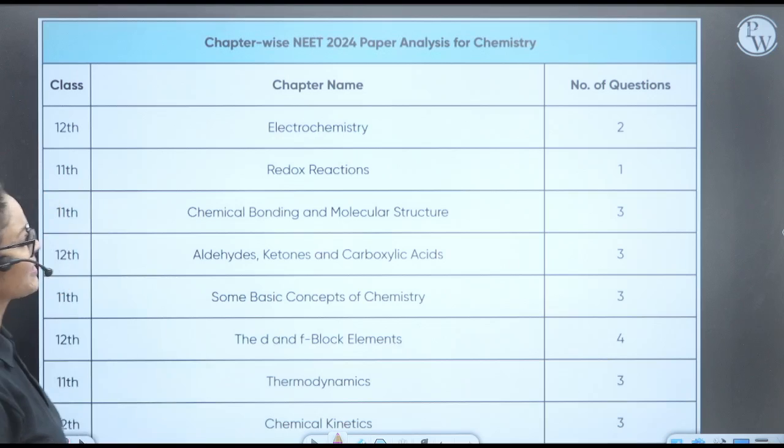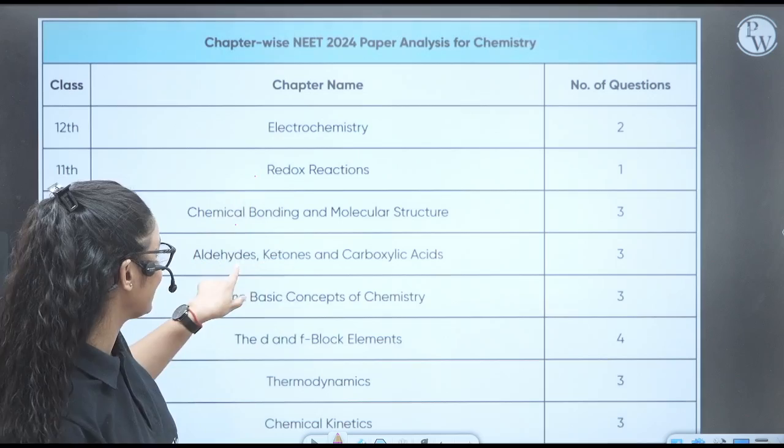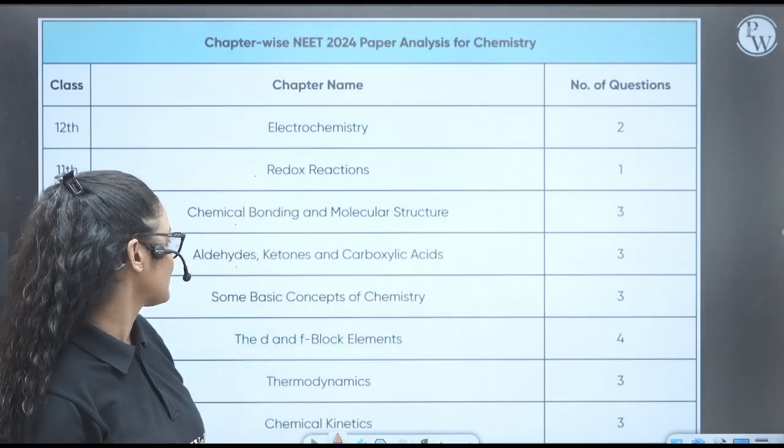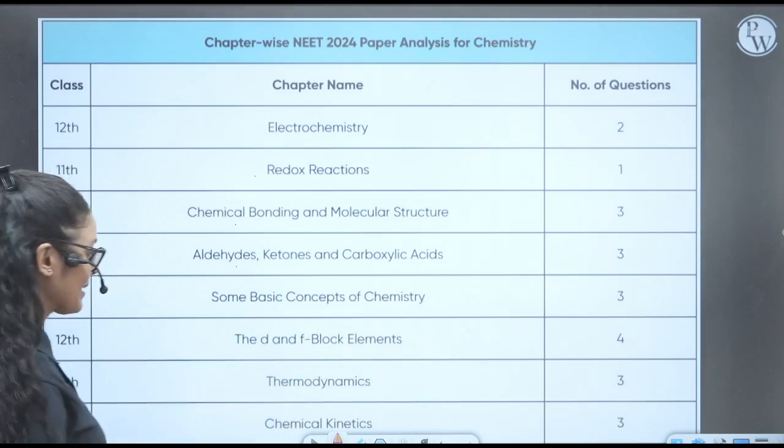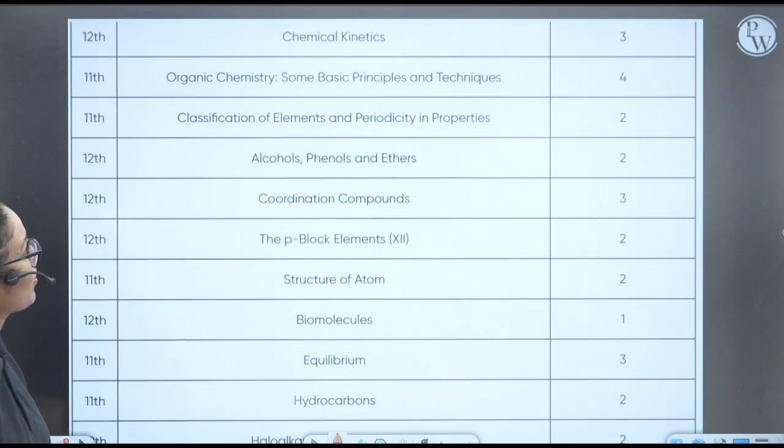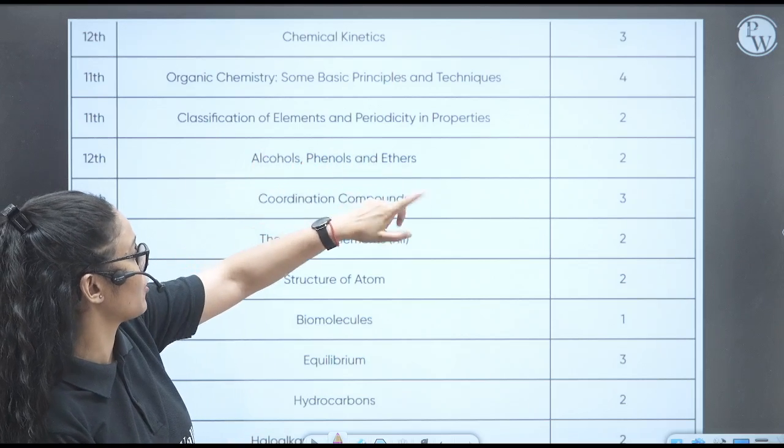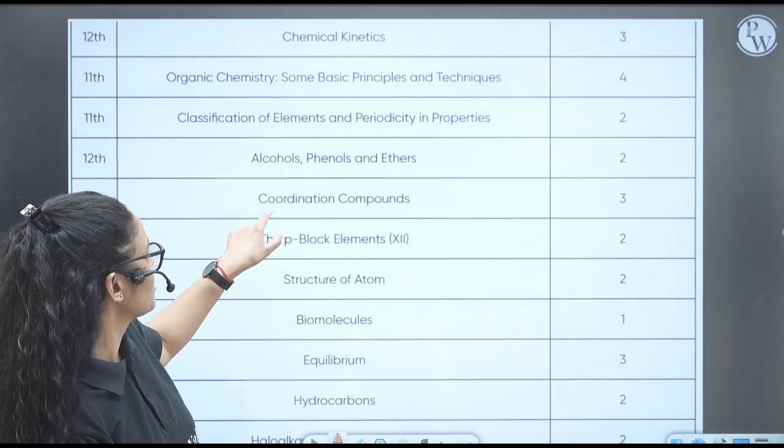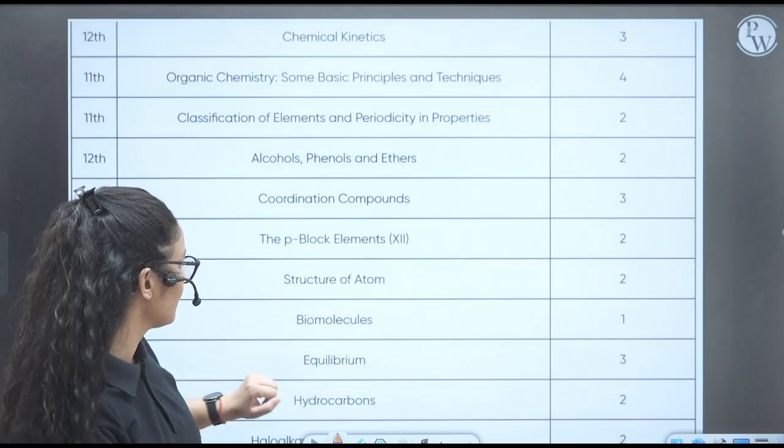Now see the chemistry paper. First of all, electrochemistry, they have asked two questions. Redox reaction, one. Chemical bonding, three. Aldehyde ketone carboxylic, three. Some basic concept of chemistry, three. D and F block, four. Thermodynamics, three. Chemical kinetics, three questions. Organic chemistry, four questions. Classification of elements and periodicity, two. Alcohol, two. Coordination compound, three. P block, two. Structure of molecule, two. Biomolecules, one.